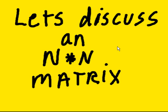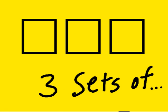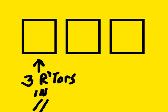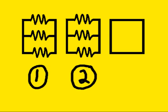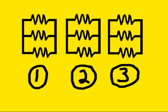Let's discuss an n-by-n matrix. Here I have three sets of three resistors in parallel. One here, another here, and another here.